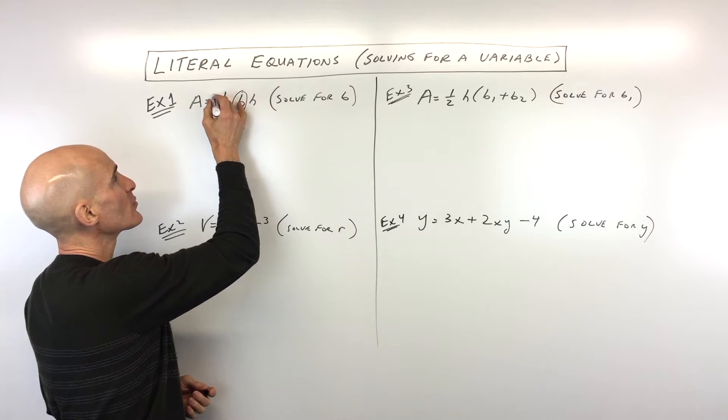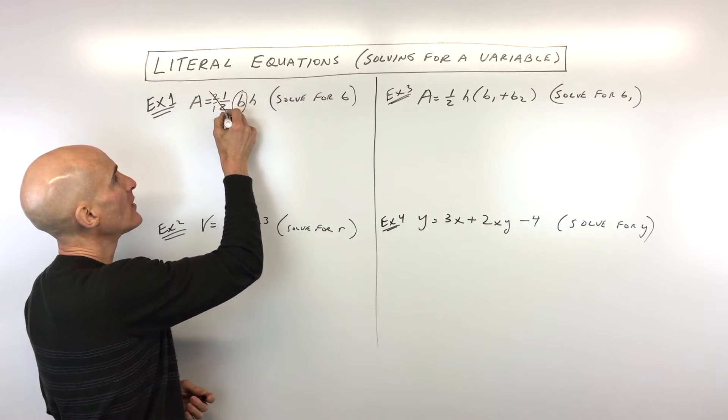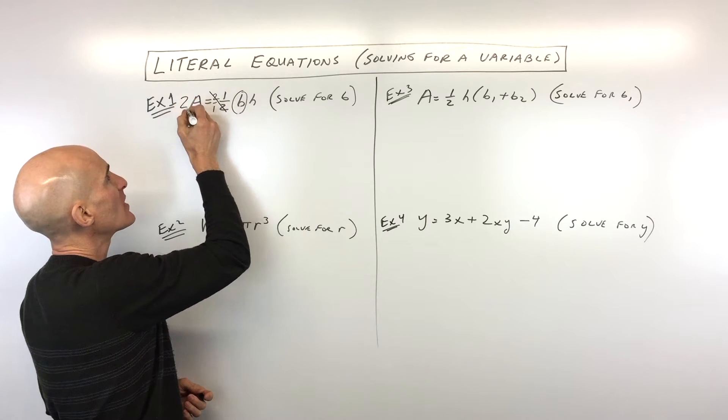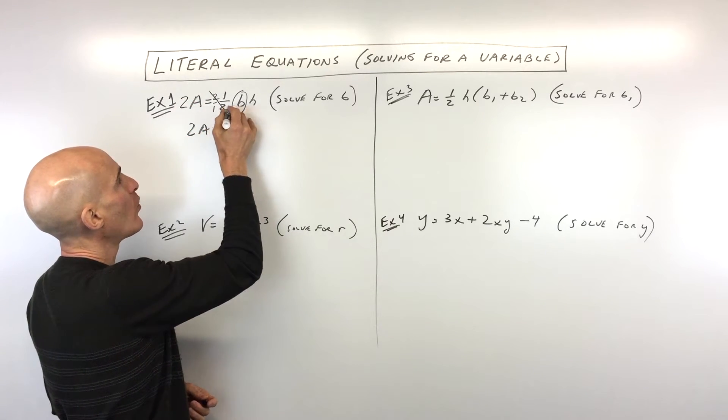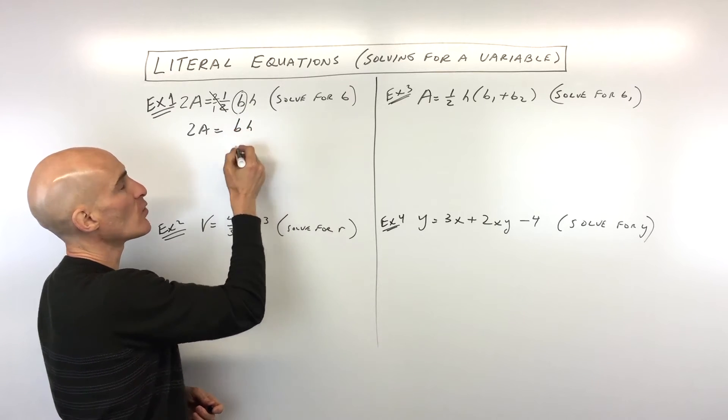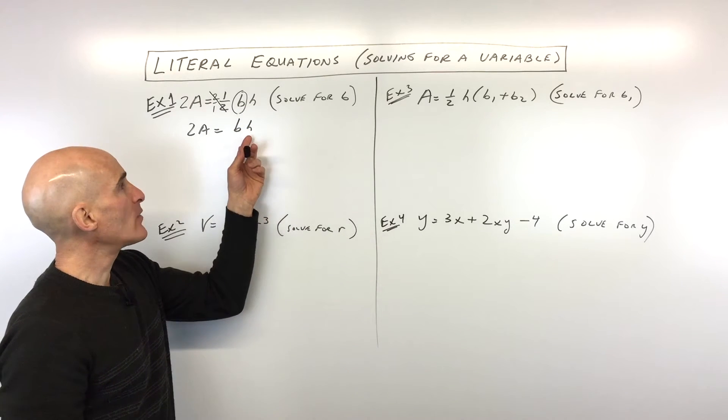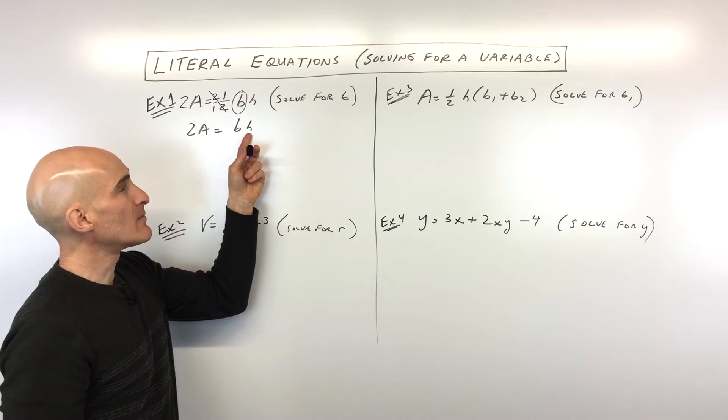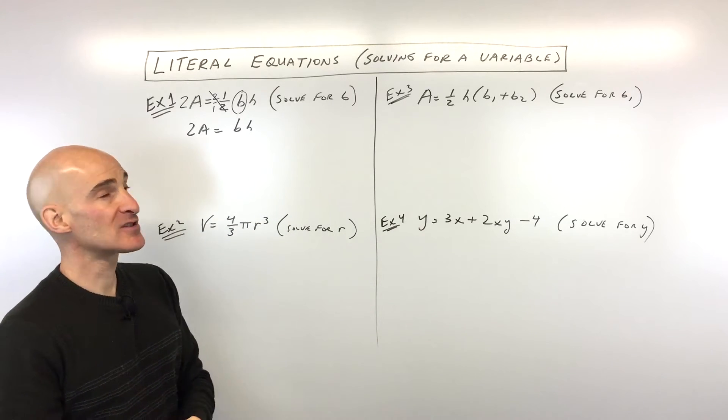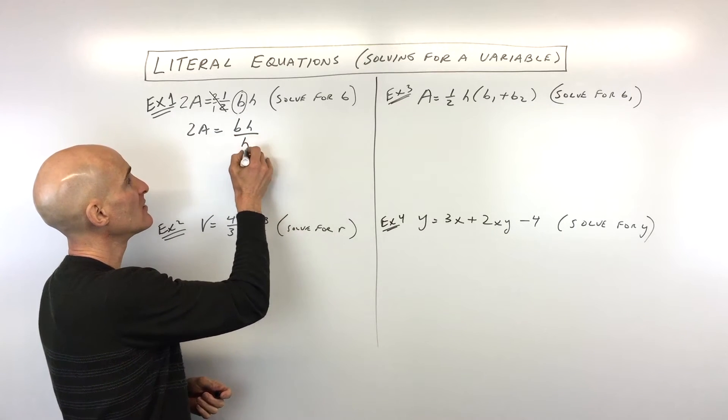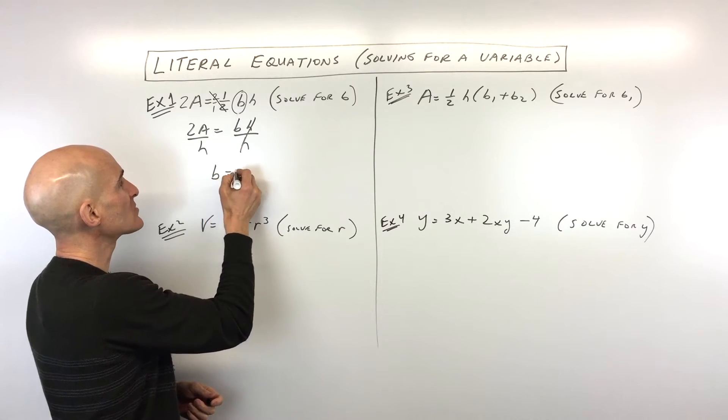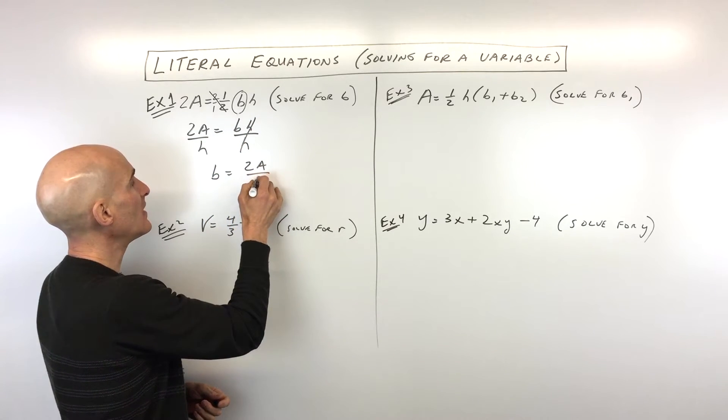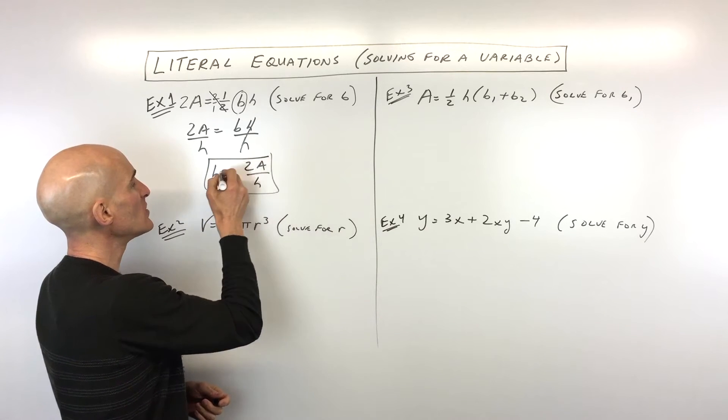Or what you can do is you can multiply by the reciprocal. So let's go ahead and multiply by two over one. If we do that to the right side, we want to do that to the left side. So right now we're at 2A equals one times BH. One times anything is itself. Now we just want to get the B by itself. You can see it's multiplied by H. We want to do the inverse operation, the opposite, divide both sides by H. You can see those cancel.